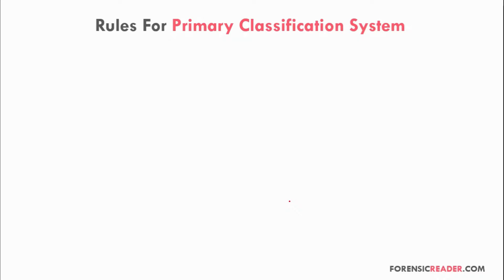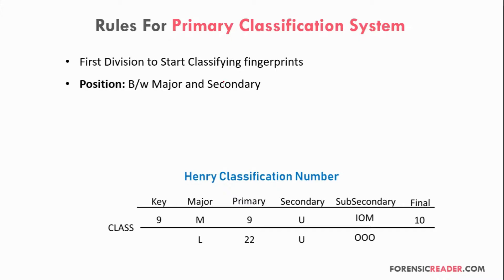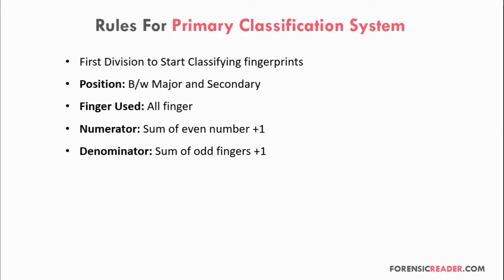The rules for the primary classification system: Rule one — classification of 10 digits always starts with the primary classification. Rule two — the values of primary classification are set between major and secondary in the Henry classification number. Fingers used: primary classification uses all 10 digit fingers, which is why it is named a 10-digit classification. The numerator values come from the sum of even-numbered fingers plus one; similarly, the denominator is the sum of odd-numbered fingers plus one. Only whorl patterns are used.